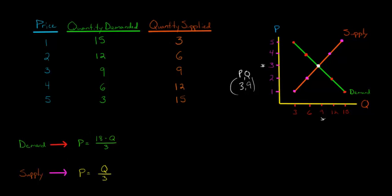So what we do is we set the equations equal to each other and then we solve. So we're going to have 18 minus Q divided by 3, and then we just set that equal to Q divided by 3. And even though this was the quantity demanded and this is the quantity supplied, we just use a generic Q because we assume at the equilibrium point the quantity supplied is going to be equal to quantity demanded.